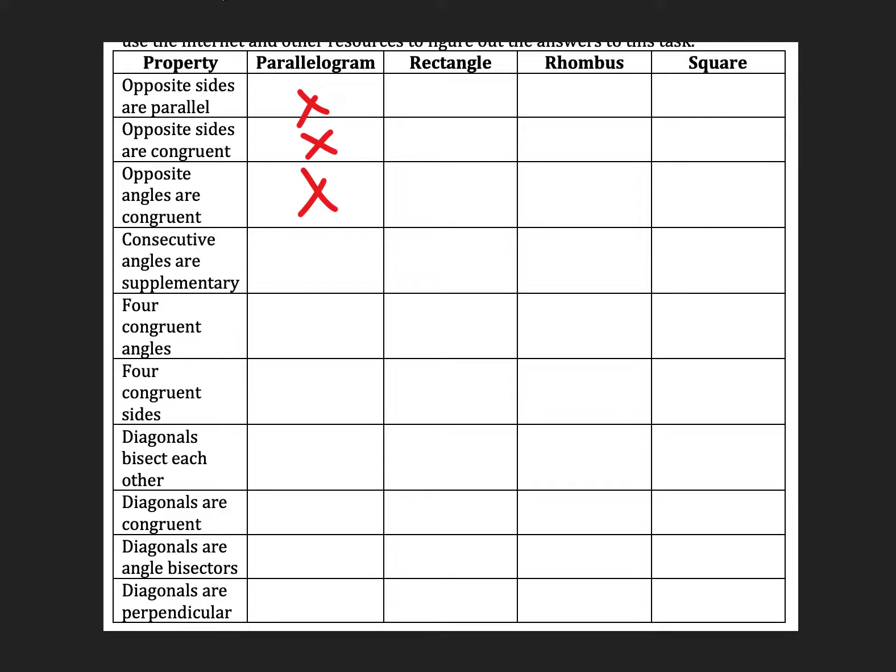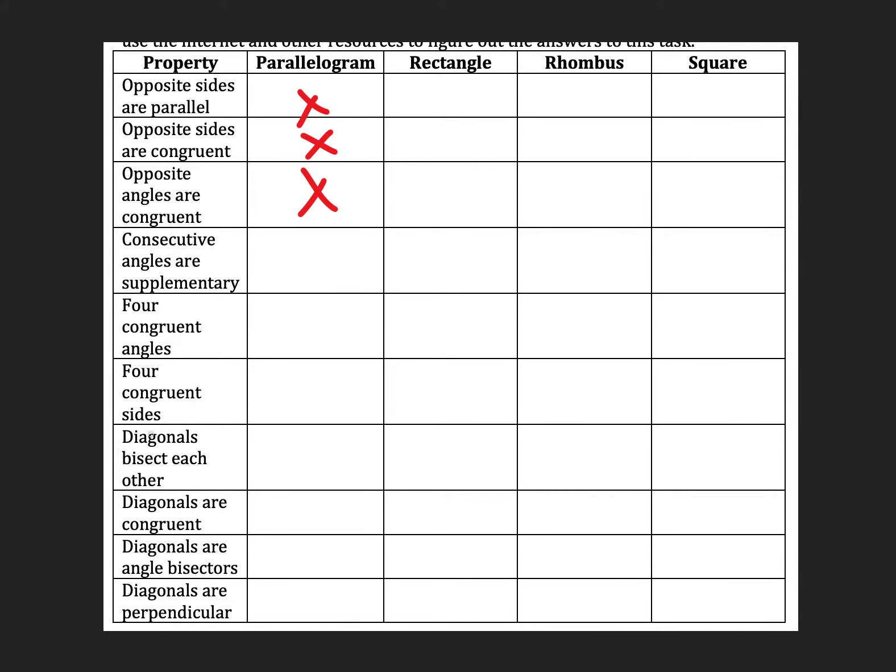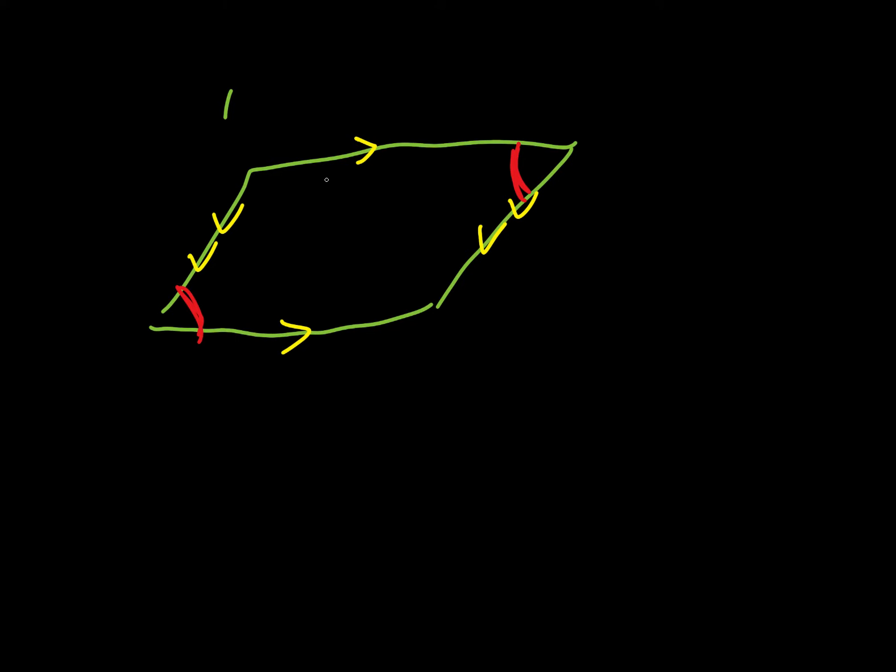Opposite angles are also congruent. What that means is the angles that don't share any sides, so those two red angles I just drew, those are both congruent. Consecutive angles are supplementary, that is also true, and what that means is if I look at two angles, like if I'm rotating around and the two that come next to each other, those will always add up to 180 degrees.